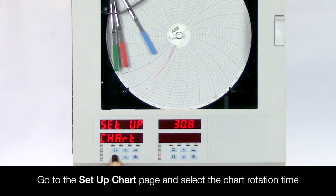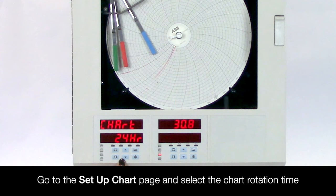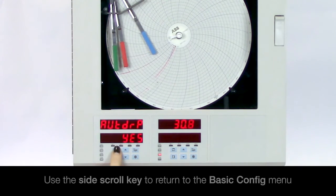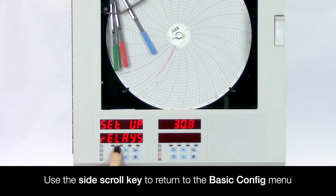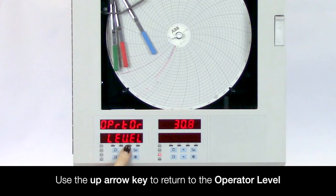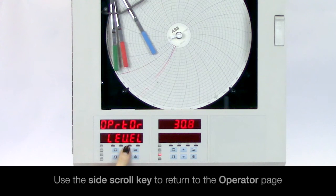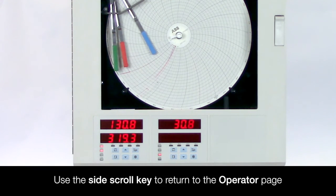Now go to the setup chart page and select the chart rotation time you wish to use. Once finished use the side scroll key to return to the basic config menu and up arrow to the operator level. Then side scroll again to return to the operator page.